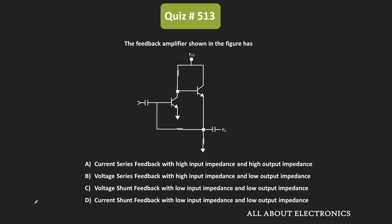Hey friends, welcome to the YouTube channel all about electronics. In this question, we have been given a feedback amplifier circuit. For the given circuit, we have been asked to find the type of feedback, and based on the feedback, we have also been asked to find the input and output impedance of this amplifier circuit.